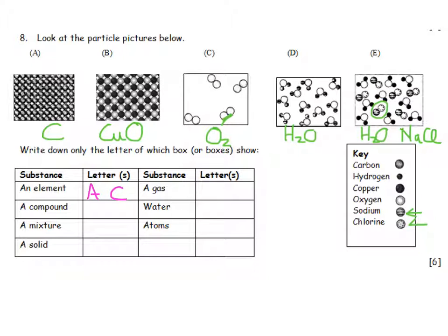A compound, we've got copper oxide. That's two elements together. So that's a compound. And water is H2O. So that's a compound. A mixture, where I've got two different types of particles in there, is going to be E.